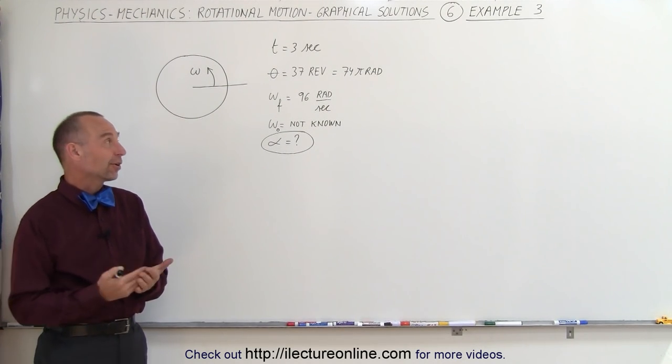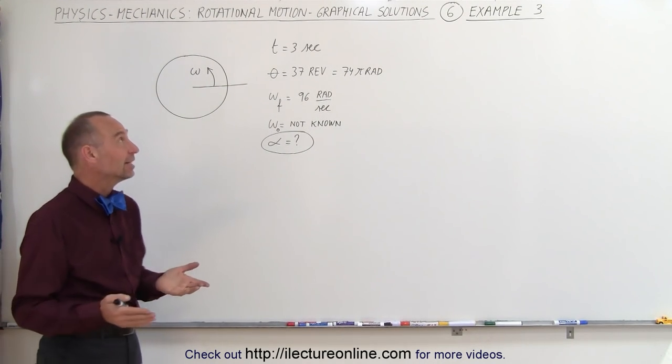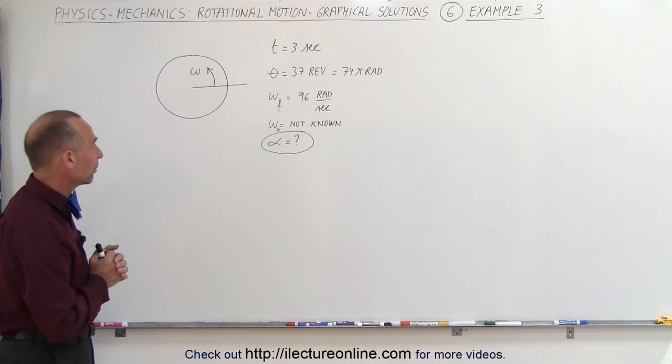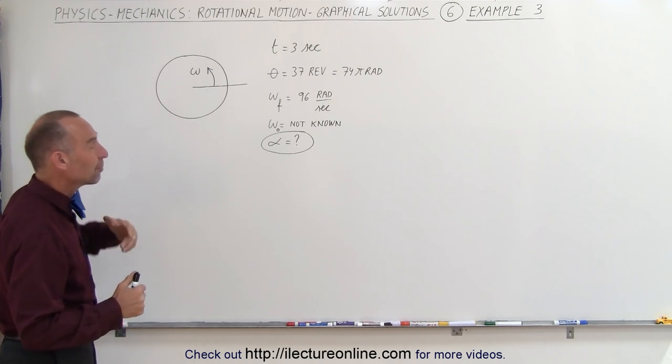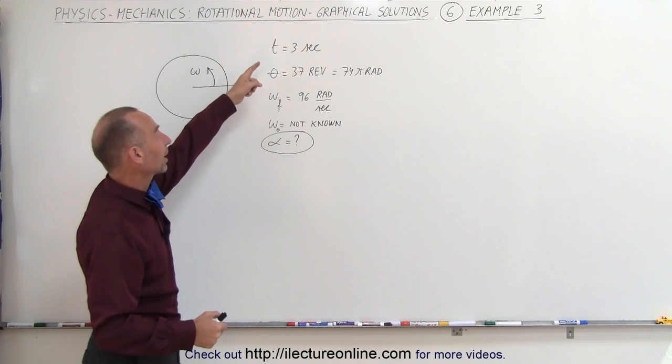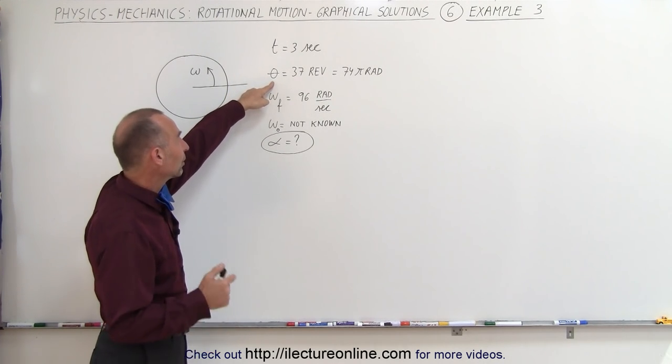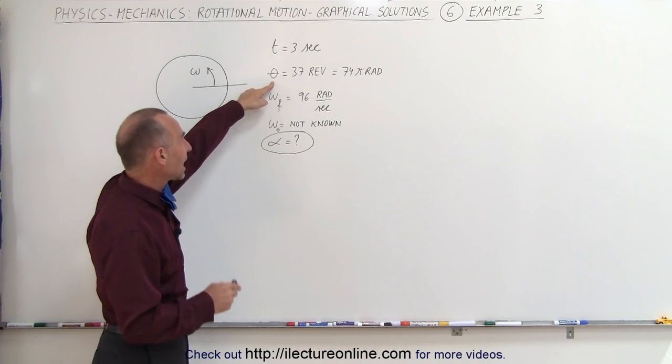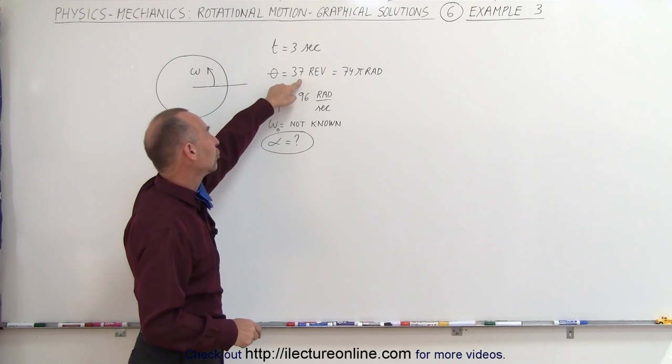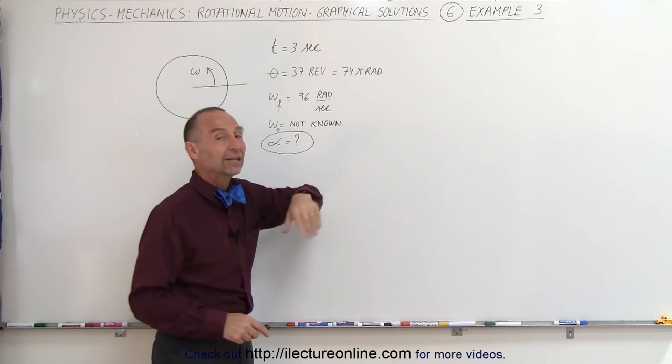Welcome to ElectronLine. Here's our third example of how to use graphical techniques to solve rotational motion problems. In this case we have an object that's been rotating for three seconds.